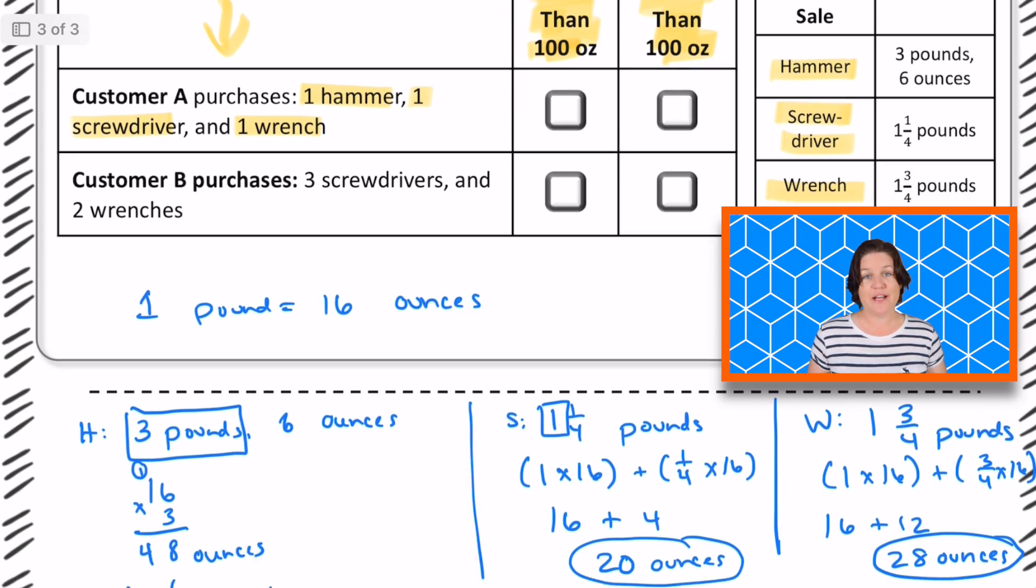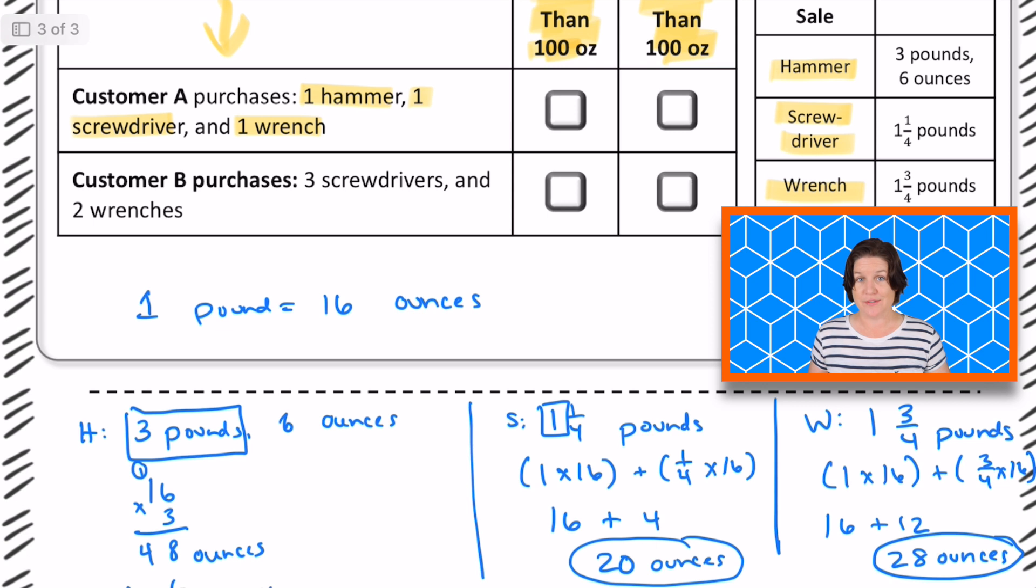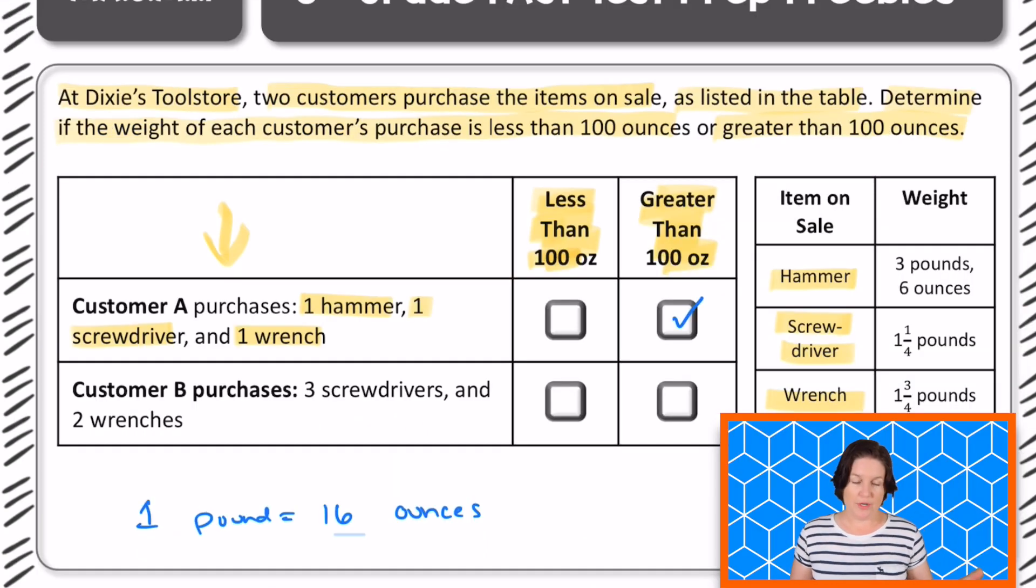That would be 102 ounces there. So is that less than or greater than 100 ounces? Greater than, right? So we can go ahead and mark that one. So we found the amount that customer A, the weight of the tools that customer A purchased. So now we need to work on customer B.